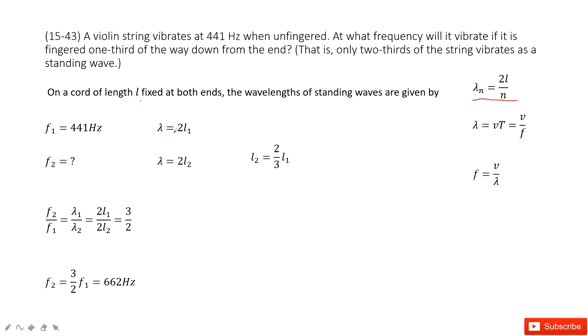So that means in the first case, the lambda is 2L1. In the second situation, the lambda becomes 2L2. So this is lambda 1, this is lambda 2. And then we find the ratio for L2 and L1 is 2 thirds.